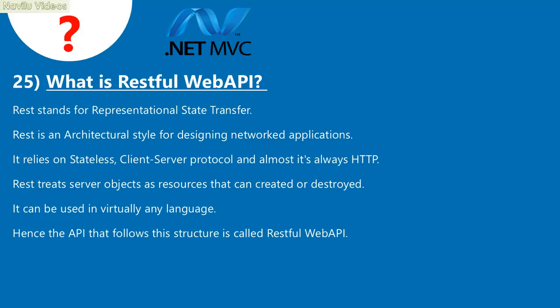Question 25: What is a RESTful Web API? REST stands for Representational State Transfer. REST is an architectural style for designing networked applications. It relies on a stateless client-server protocol, almost always HTTP. REST treats server objects as resources that can be created or destroyed. It can be used in virtually any language. An API that follows this structure is called a RESTful Web API.